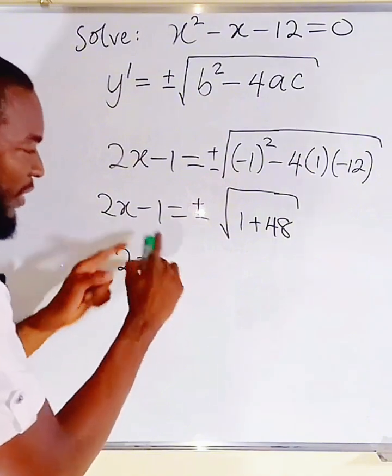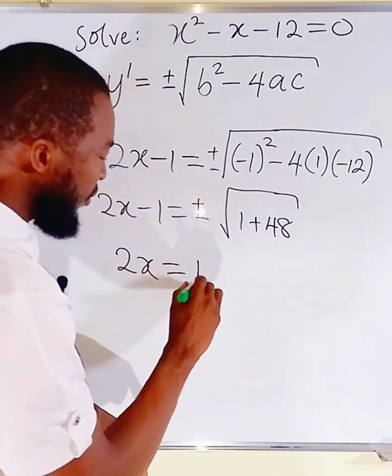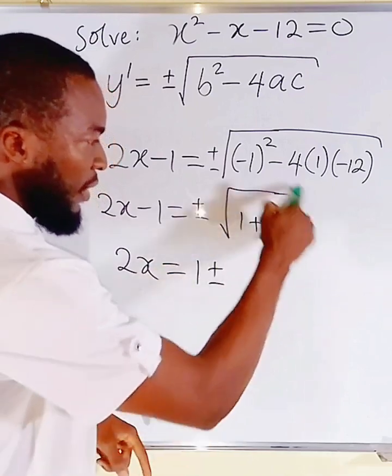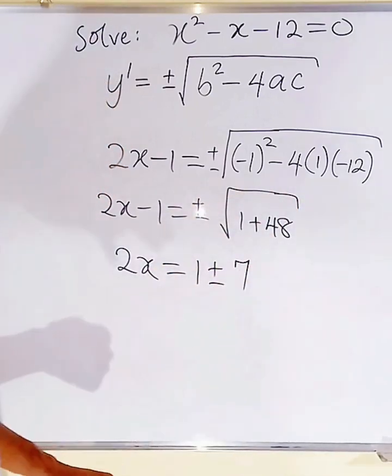We have 2x. Let me take this negative 1 to the right-hand side. You know, it is going to become positive 1. Then plus or minus. You know, this is already 7. So, from here, we can divide both sides by 2.